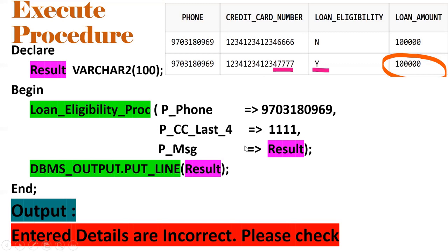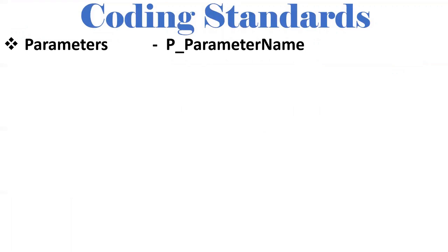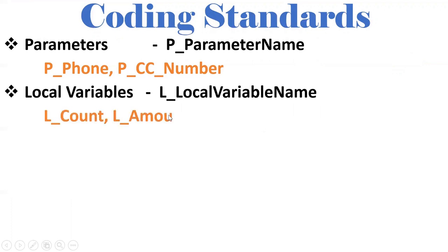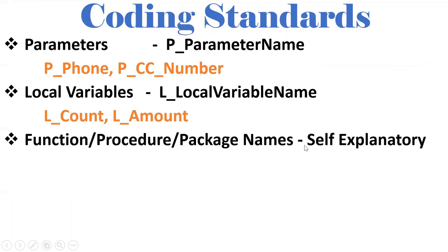Now some coding standards to follow in real-time projects. Input and output parameters should use the p_ prefix — for example, p_phone, p_last_four. Local variables should use the l_ prefix — for example, l_count, l_loan_amount. Procedure names, function names, and package names should be self-explanatory — for example, loan_eligibility_proc clearly describes what the procedure does. In real time, always follow these coding standards.